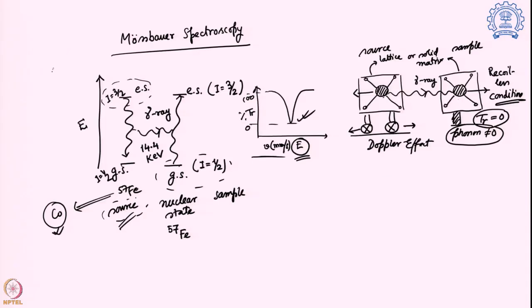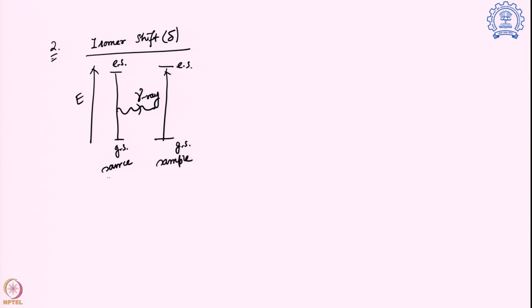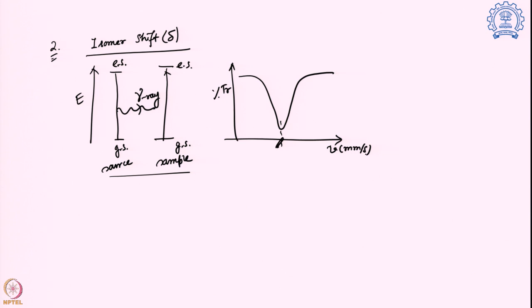That covers the basics of Mössbauer spectroscopy and how we achieve the resonating condition. The two important factors are: the isomer shift and quadrupolar splitting. The isomer shift is the value at which the ground state and excited state energies of the source and sample exactly match — the position in millimeters per second at which this occurs is the delta value, or isomer shift.